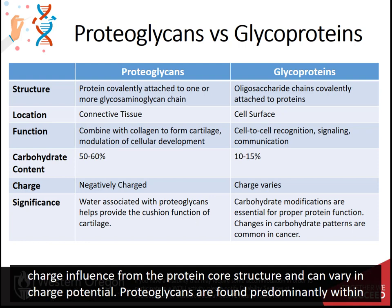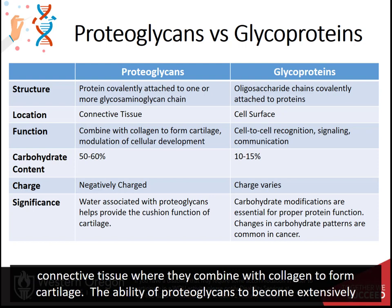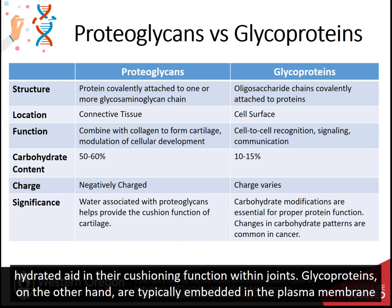Proteoglycans are found predominantly within connective tissue, where they combine with collagen to form cartilage. The ability of proteoglycans to become extensively hydrated aids in their cushioning function within joints.